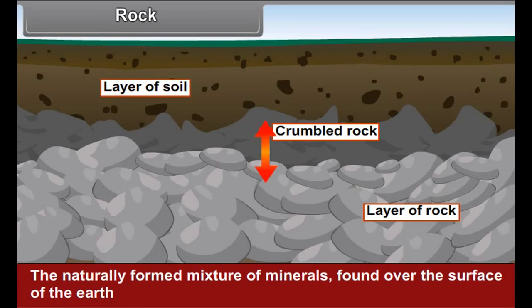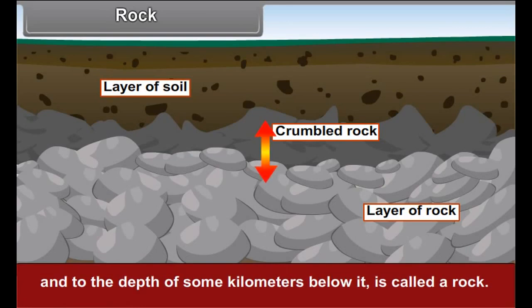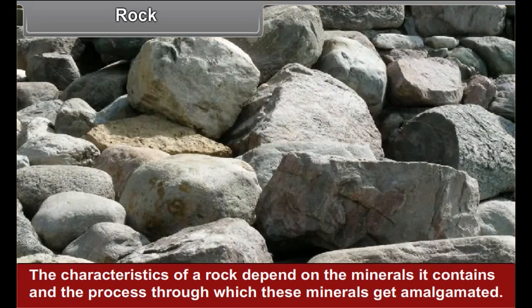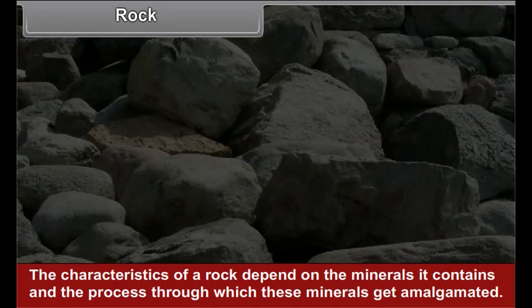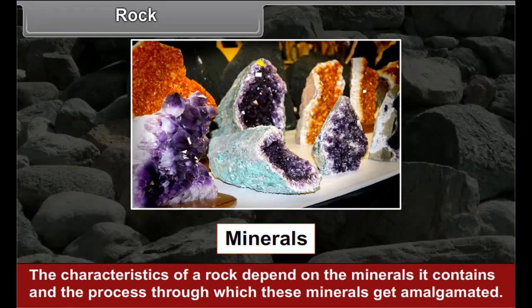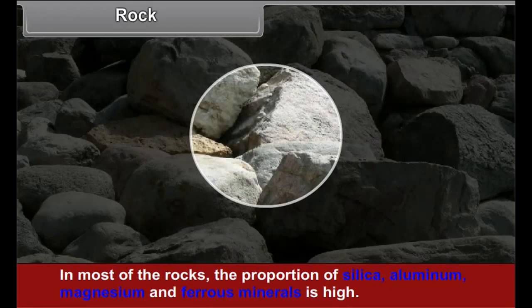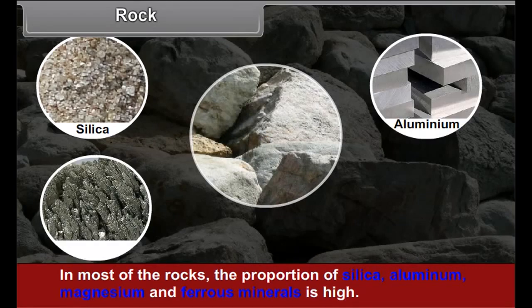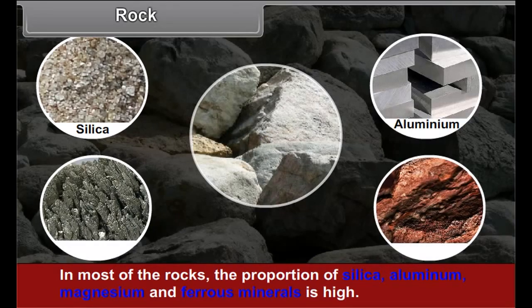The naturally formed mixture of minerals found over the surface of the Earth and to the depth of some kilometers below it is called a rock. The characteristics of a rock depend on the minerals it contains and the processes through which these minerals get amalgamated. In most of the rocks, the proportion of silica, aluminium, magnesium and ferrous minerals is high.